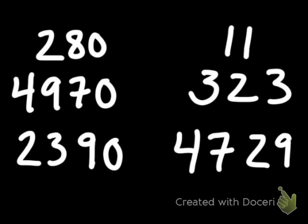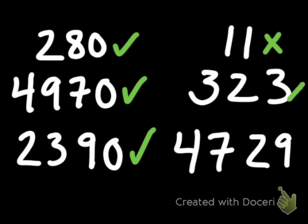10 is perhaps the easiest number to remember the rule for. All you have to do to see if a number is divisible by 10 is look at its last digit — does the number end in a 0? If it does, then that number is divisible by 10. All the numbers on the left end in 0, so they are all divisible by 10. The numbers on the right do not end in 0, so none of them are divisible by 10.